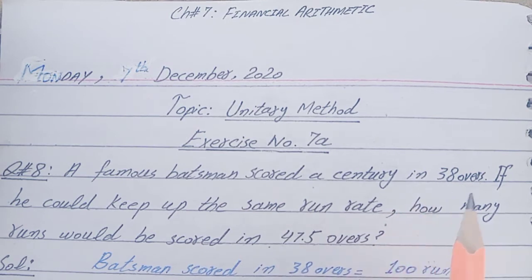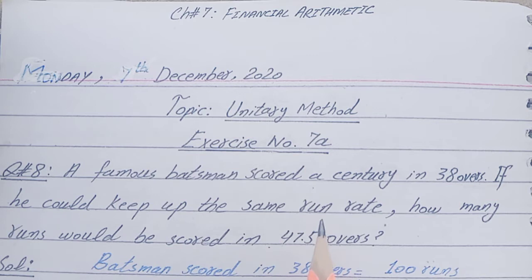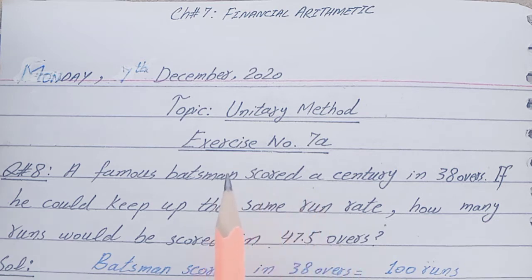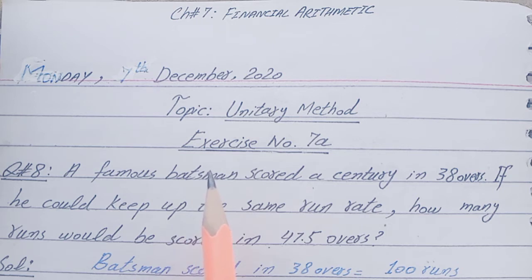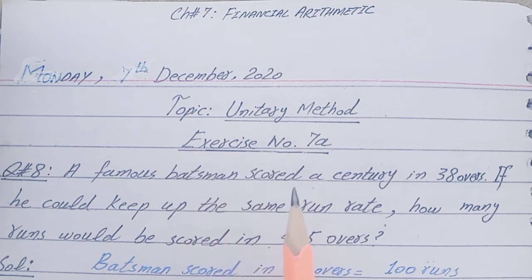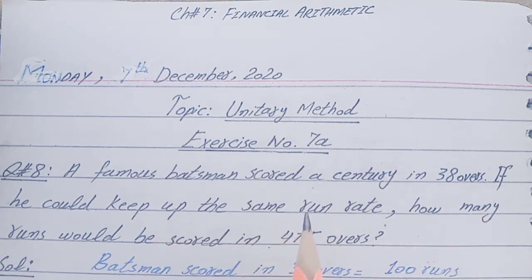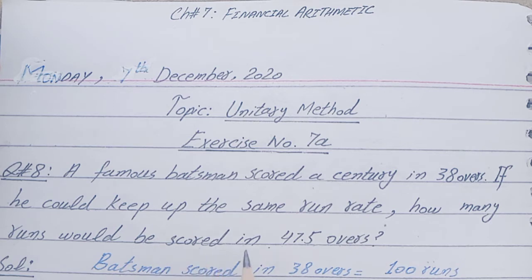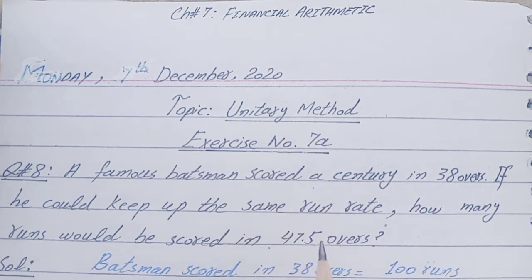Question number 8 is written as: a famous batsman scored a century in 38 hours. If he could keep up the same run rate, how many runs would he score in 47.5 hours? You can consider any batsman like Shahid Afridi, etc. The batsman scored a century, meaning 100 runs, in 38 hours. If the run rate is the same, how many runs will be scored in 47.5 hours?